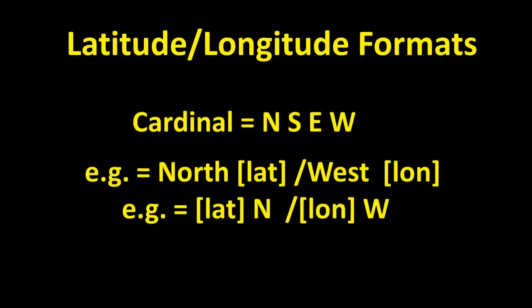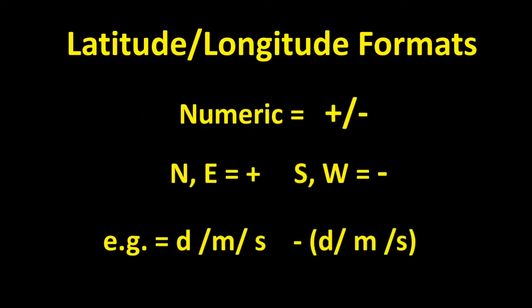There are also three acceptable formats for indicating cardinal direction from the equator and prime meridian. You can use the cardinal direction N, S, E, or W, placing it either in front of or behind the latitude and longitude figures — either is correct. The second method is to use positive and negative numbers. North of the equator and east of the prime meridian are denoted as positive numbers, while south of the equator and west of the prime meridian are always displayed as negative numbers. By convention, the plus sign is not used on positive numbers, but the negative or minus sign is used for all negative numbers.